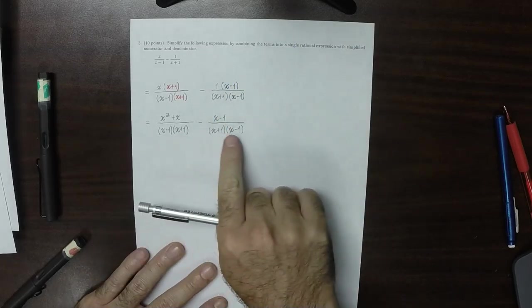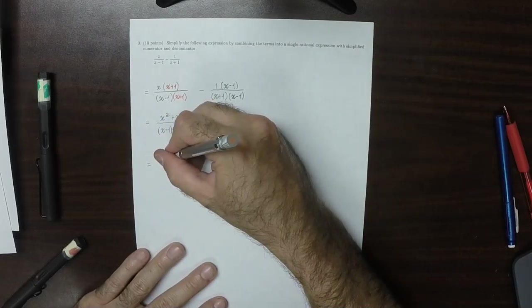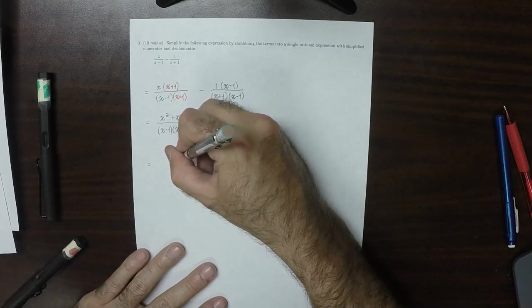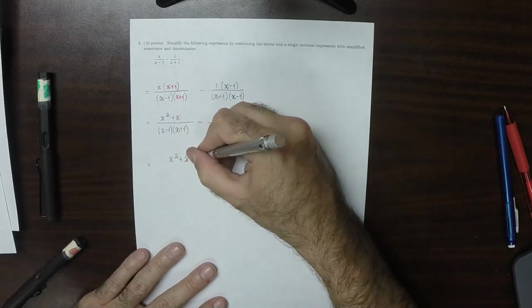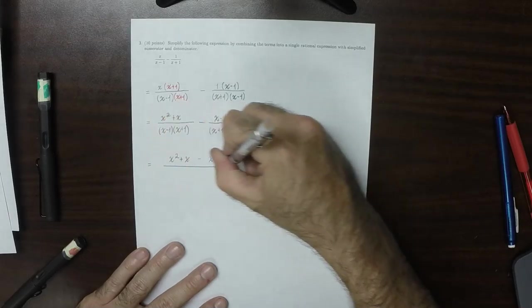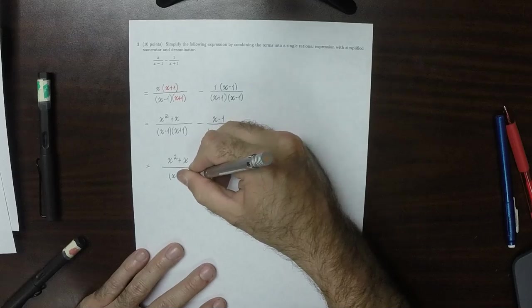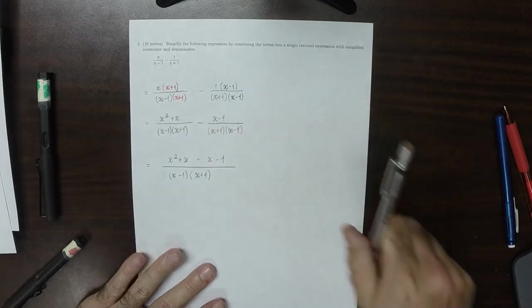So now the denominators are the same which means we can perform the subtraction. So x squared plus x and then minus x minus 1 over x minus 1 times x plus 1.